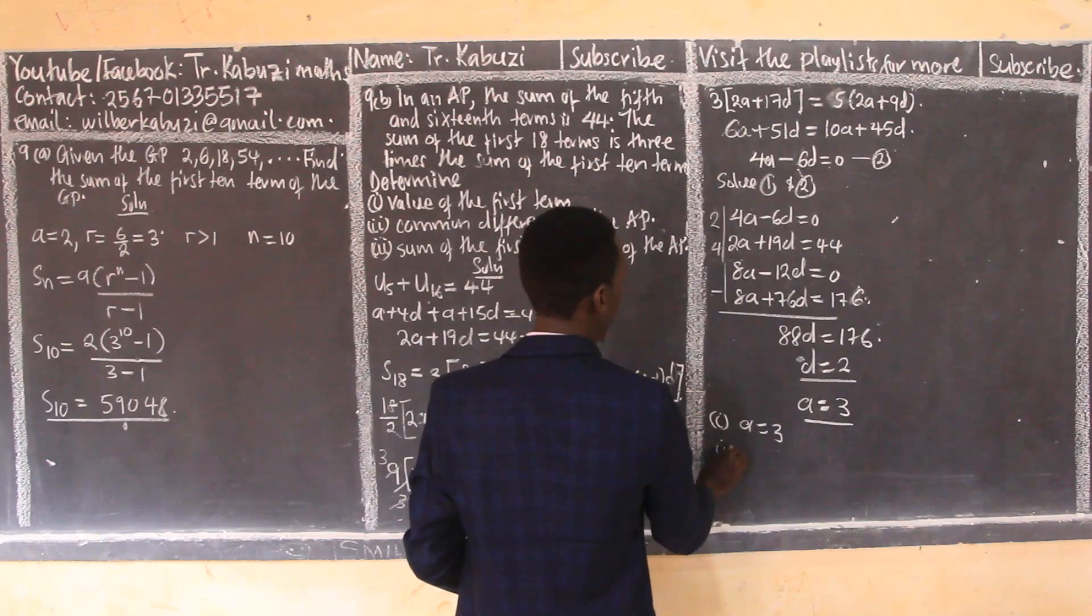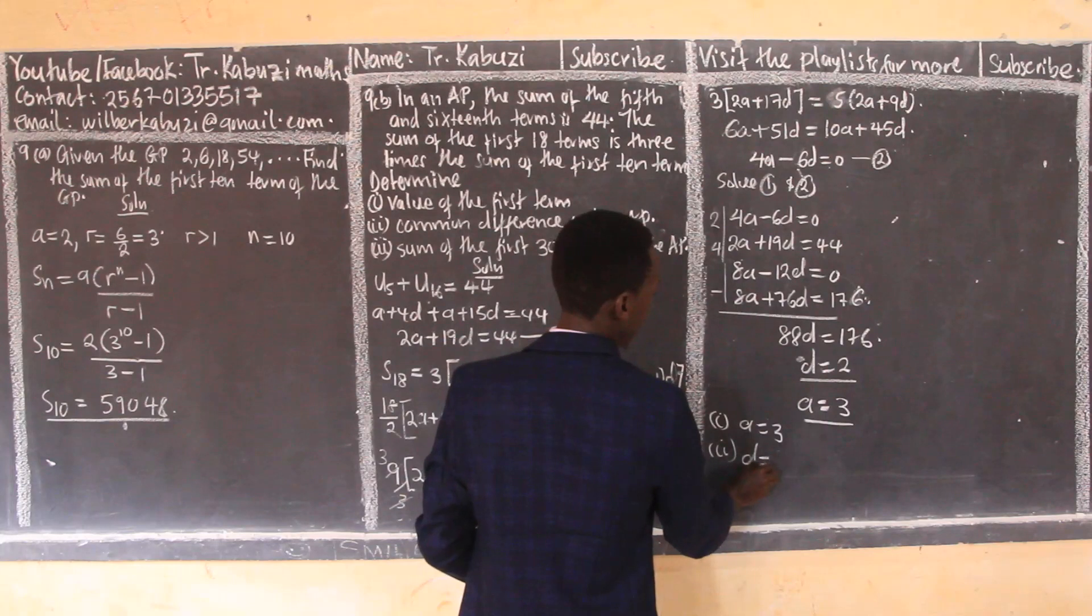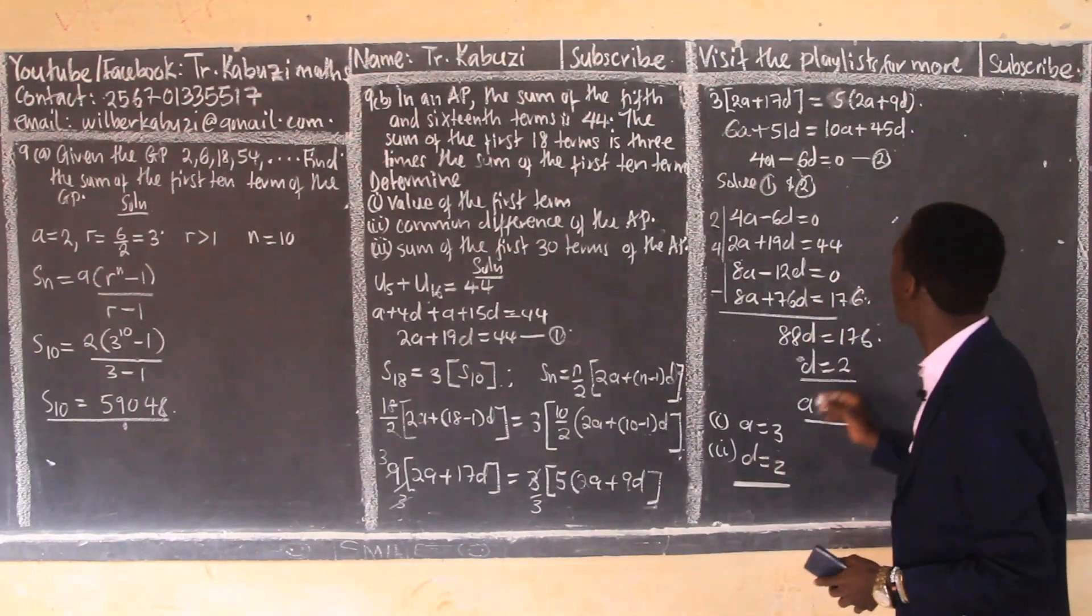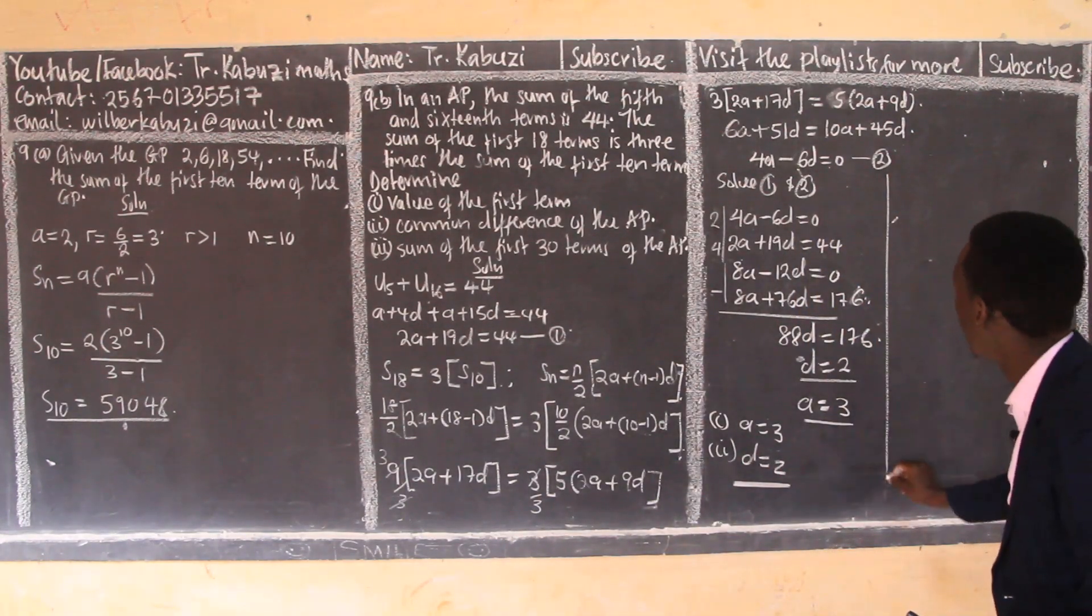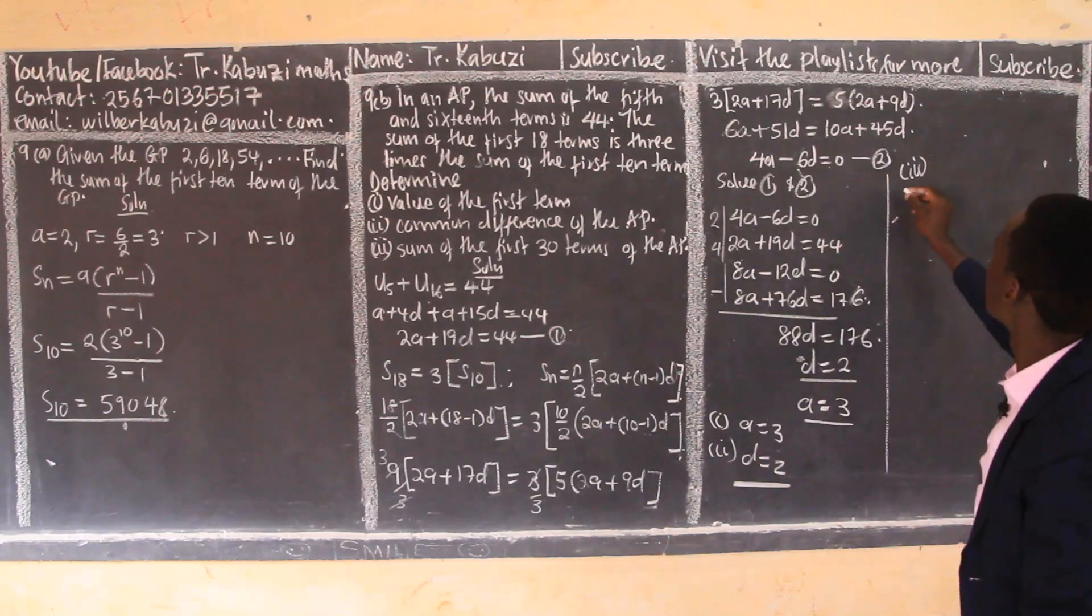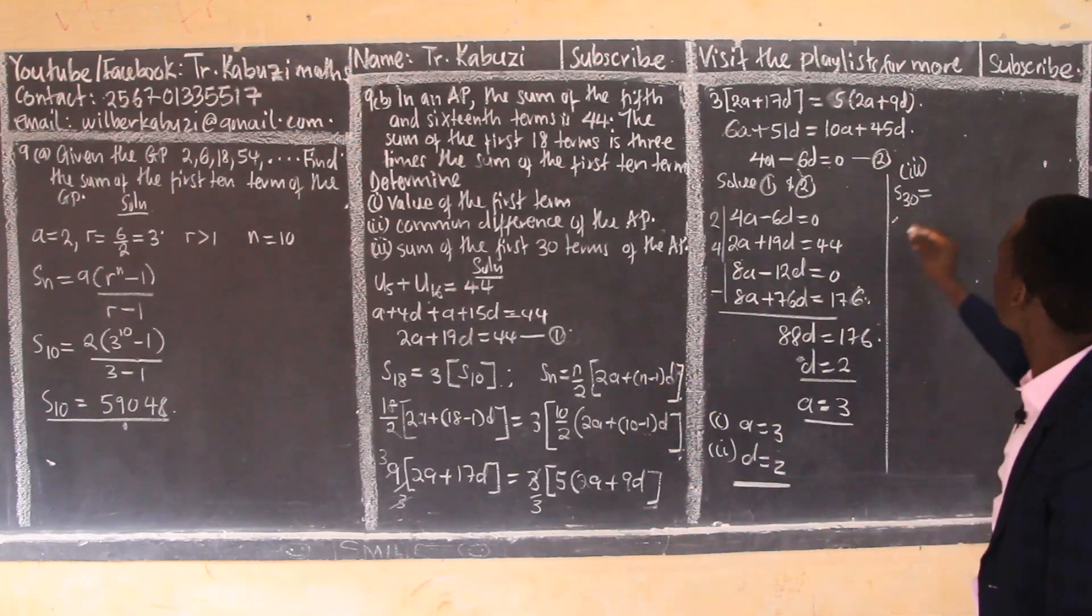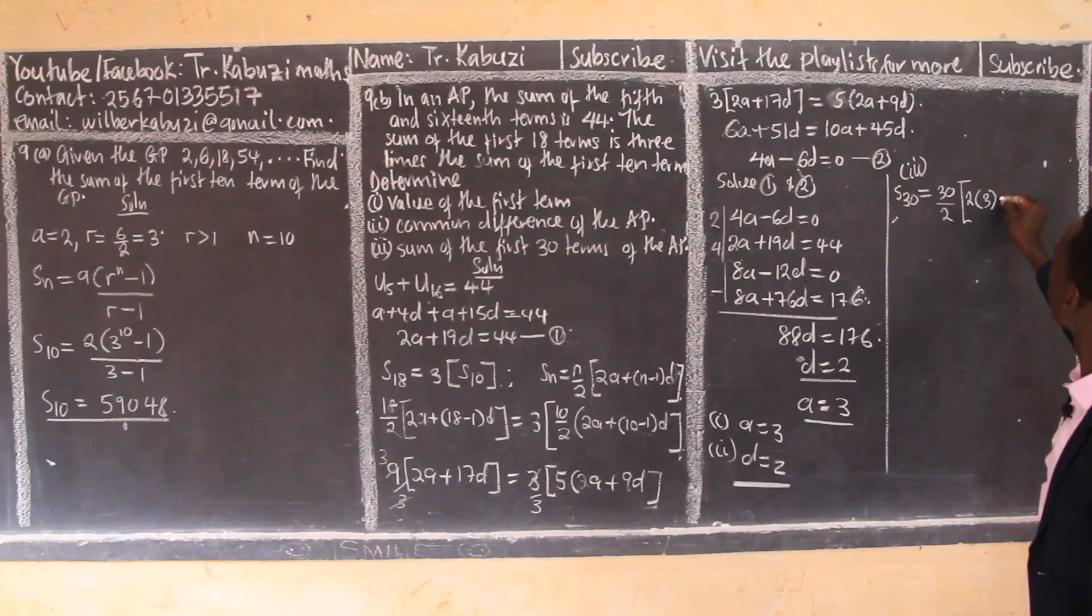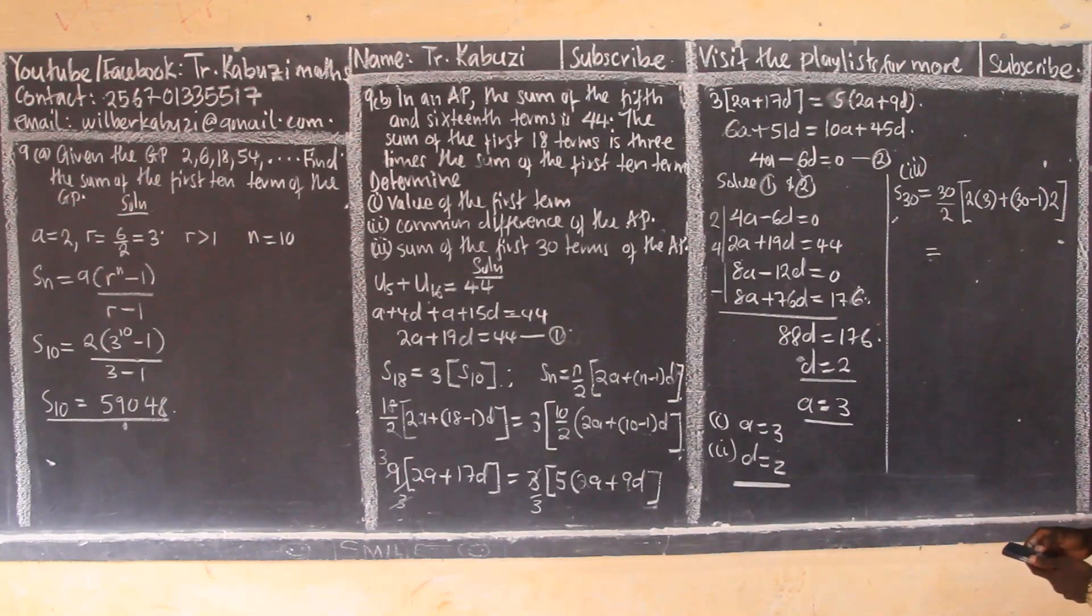So now in roman numeral 1, our a is 3. Roman numeral 2, the common difference is 2. In roman numeral 3, they want us to get the sum of the 30 terms. So our sum of 30 terms, we now use this formula: it's going to be 30 over 2 into 2a, our a is 3, then plus 30 minus 1 into our d which is 2. And so from there, don't waste time, you get your calculator.